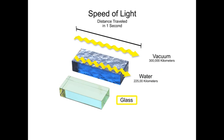In glass, light travels at 67% of its speed in a vacuum, so the light speed is 300,000 times 0.67, or about 200,000 kilometers per second.